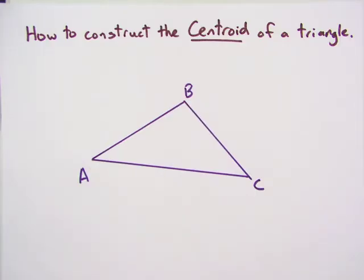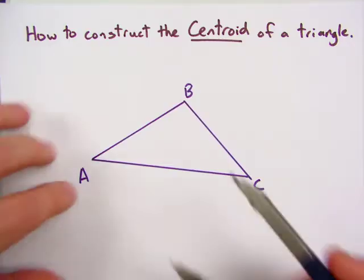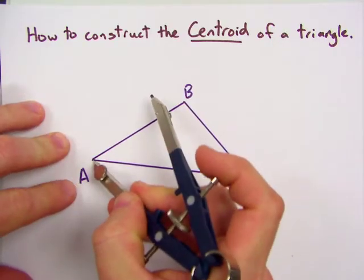So to do that, we're going to use the same construction as perpendicular bisector, because the bisector goes through the midpoint. So let's go ahead and find the midpoint of AB here.